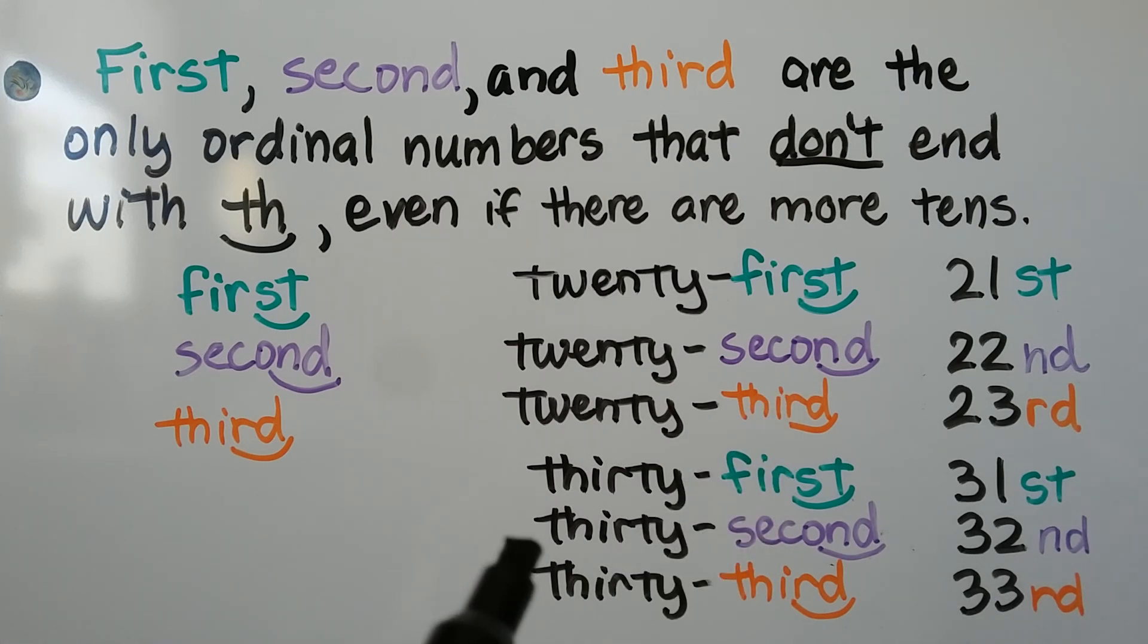Even if it's three tens, thirty-first, thirty-second, thirty-third. They're the only ones that don't end with a TH.